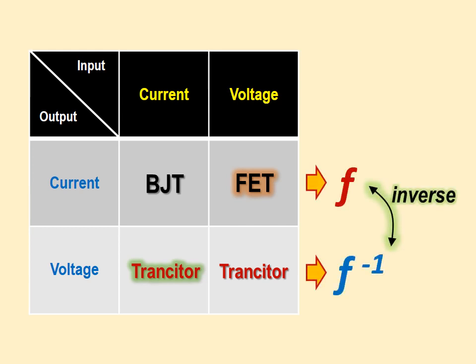Interestingly, they are in the inverse relationship with transistors. For example, FET transfers a voltage input into current output, whereas the third missing trancitor transfers a current input into voltage output. So they are opposite each other.